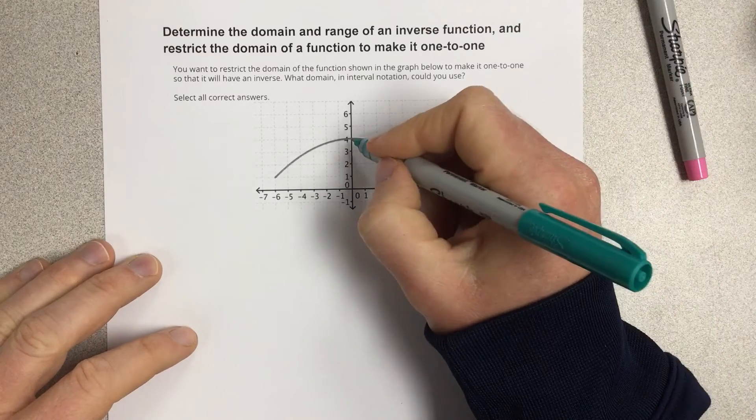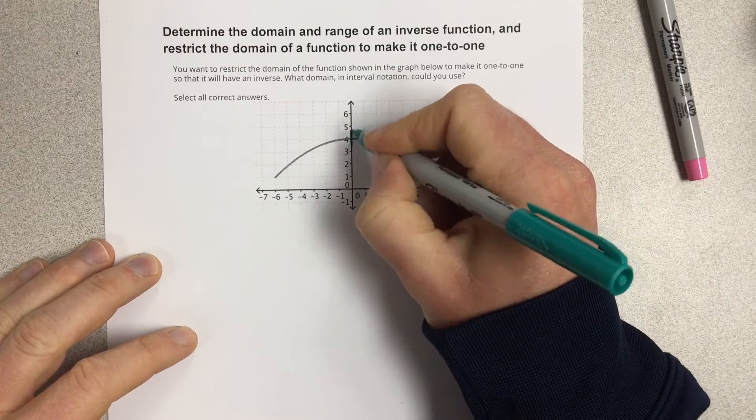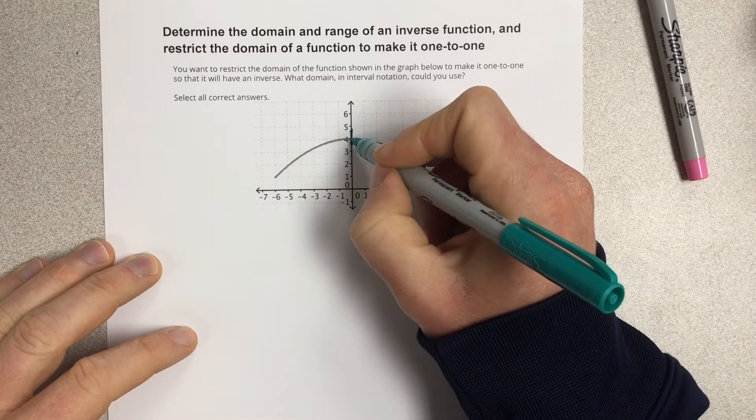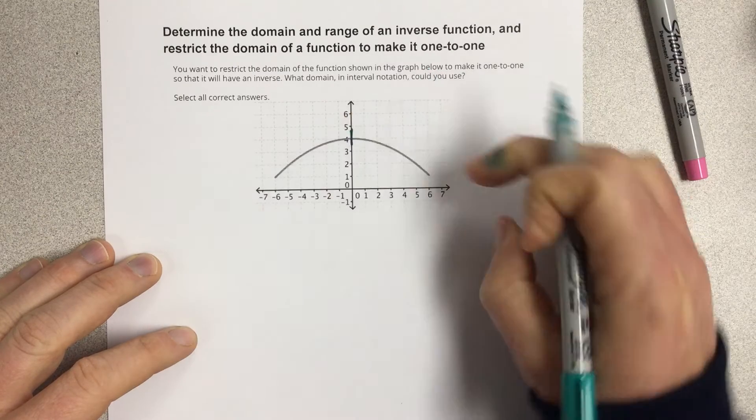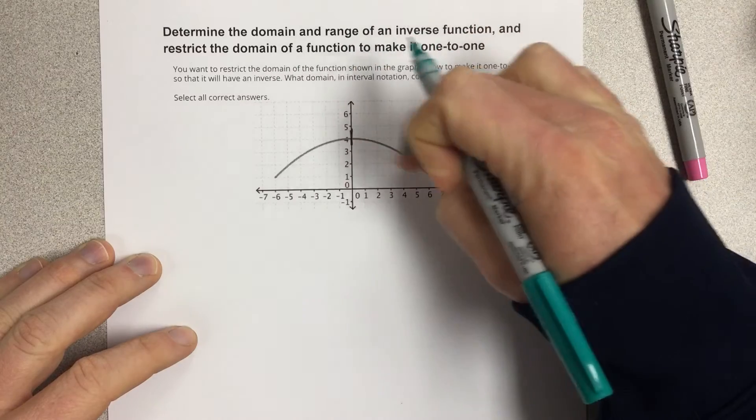I can basically cut it right at this spot and say that the domain is just this piece, or I can say the domain is this piece, but it can't be both.